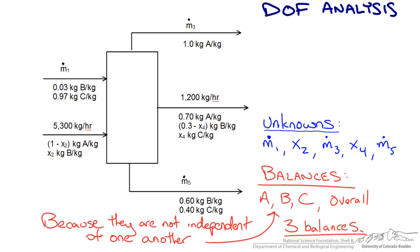So when we want to determine the degrees of freedom we take the number of unknowns and subtract out the number of balances. And so this means we have 5 unknowns minus 3 potential balances so we have a degree of freedom of 2. So we have to specify 2 more things about this system in order to be able to solve for these unknowns.